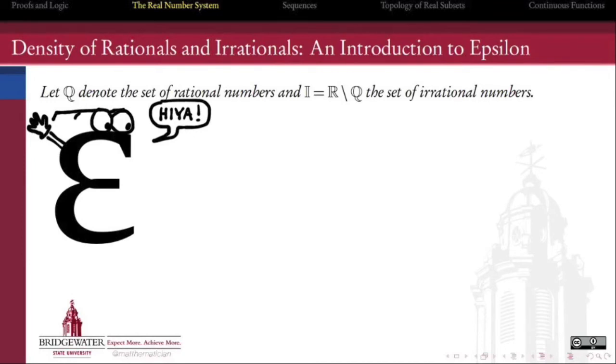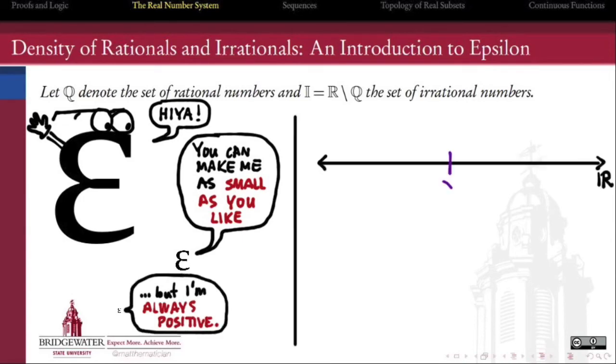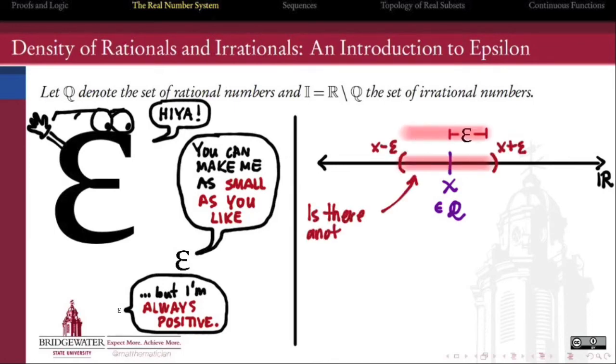Meet epsilon, the Greek letter E. In analysis, epsilon is often used to represent a real quantity that is as small as you like. If x is a rational number, then is there always another rational number within an epsilon's reach of x?